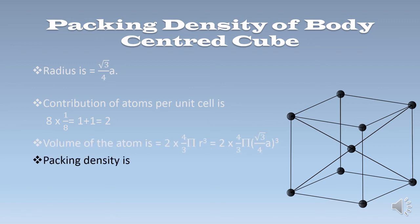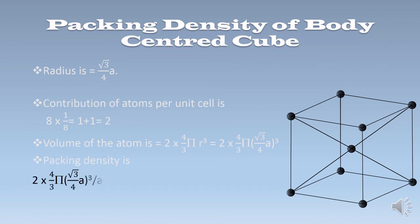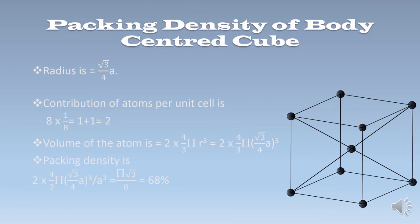Now, what is the packing density? The atomic packing factor is the volume of atoms divided by the volume of the unit cell. The volume of the unit cell is A³. So the packing density is 2 × (4/3)π × (√3/4 · A)³ divided by A³. Here we get π√3/8, which is about 68%. So for a body centered cube, the packing density is 68%, meaning 68% of the total unit cell volume is occupied by atoms.